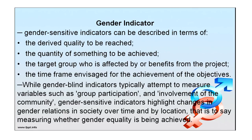Gender sensitive indicators can be described in terms of the quality to be reached, the quantity to be achieved, the target group affected by or benefiting from the project, and the time frame envisaged for achieving objectives. Gender blind indicators typically attempt to measure variables such as group participation and community involvement, but do not address the representation of women or differential gender representation. Gender sensitive indicators highlight changes in gender relations in society over time, and measure whether gender equality is being achieved.